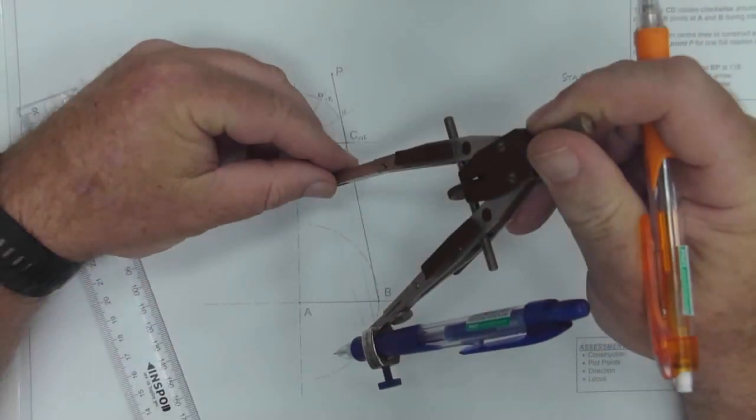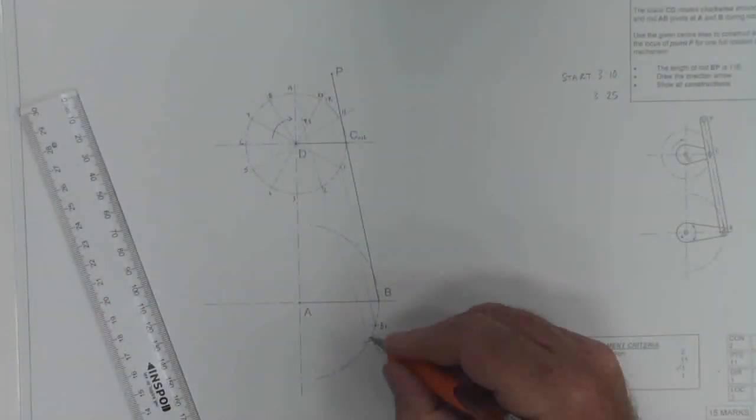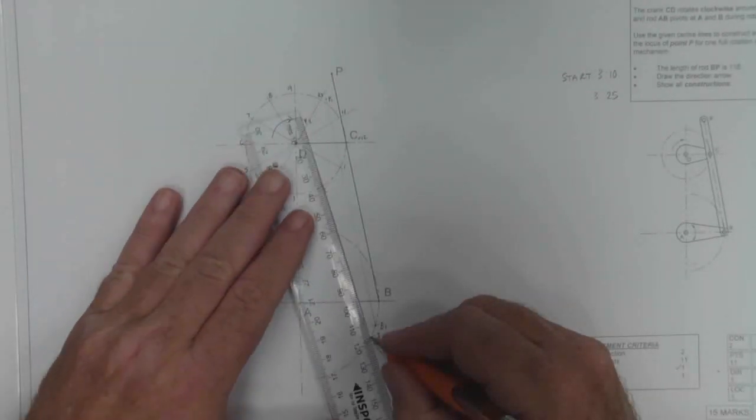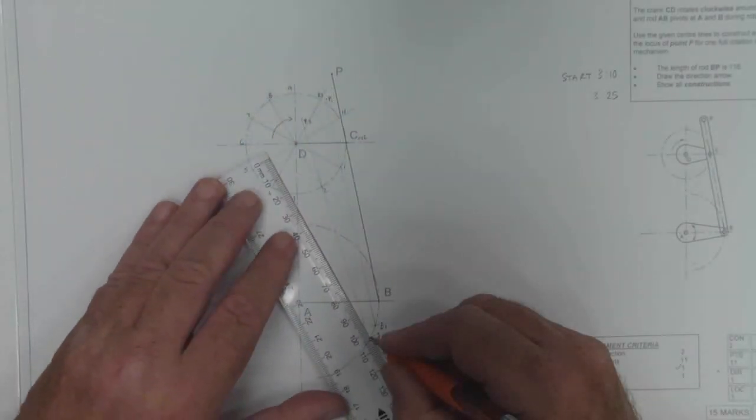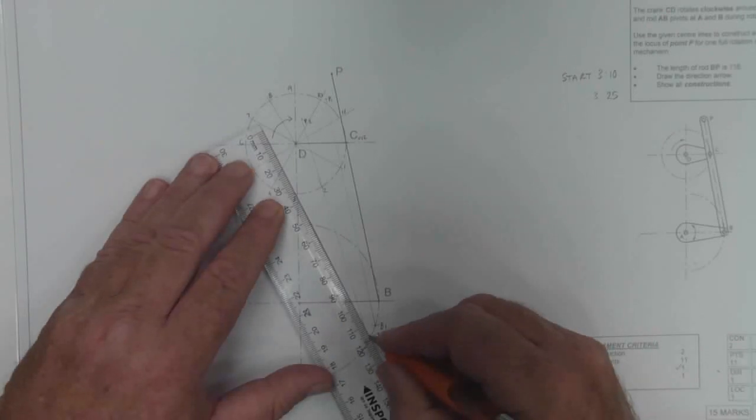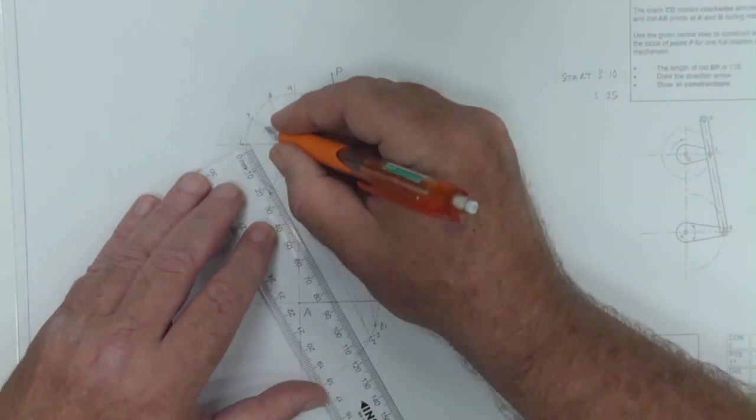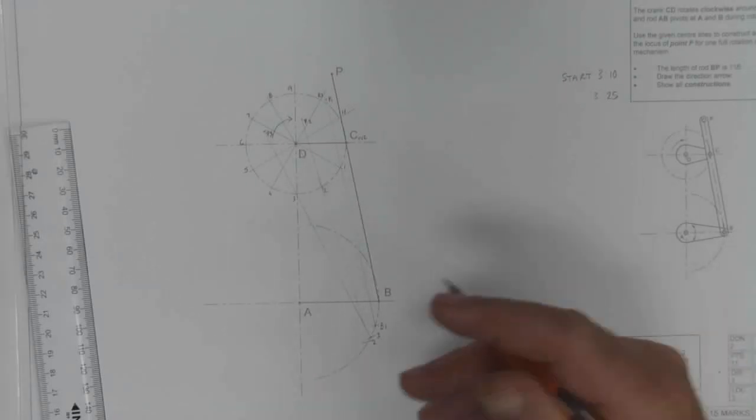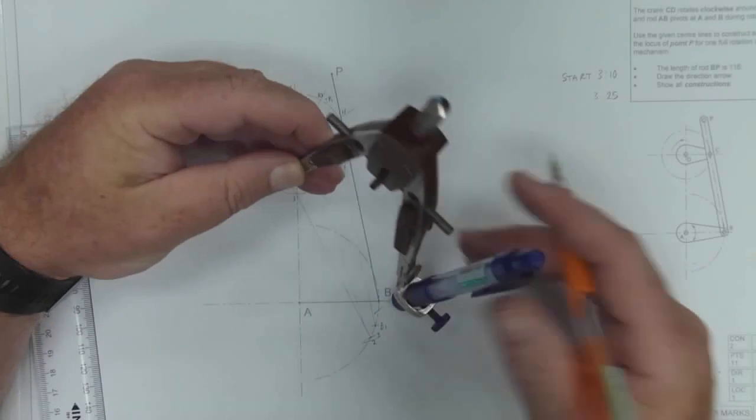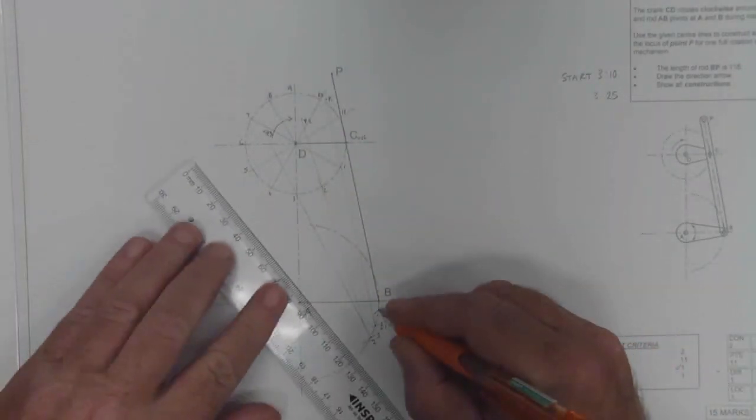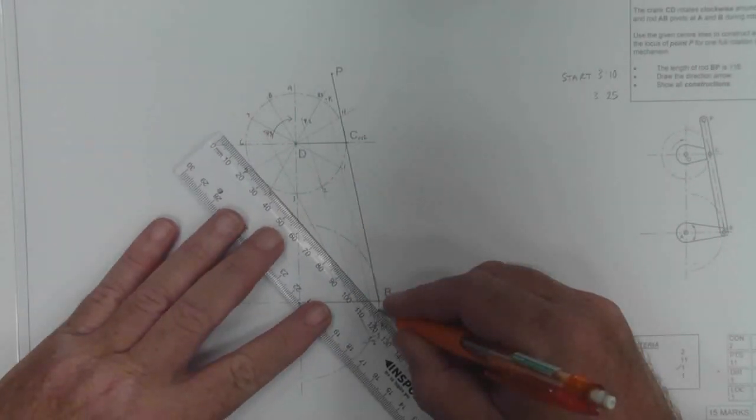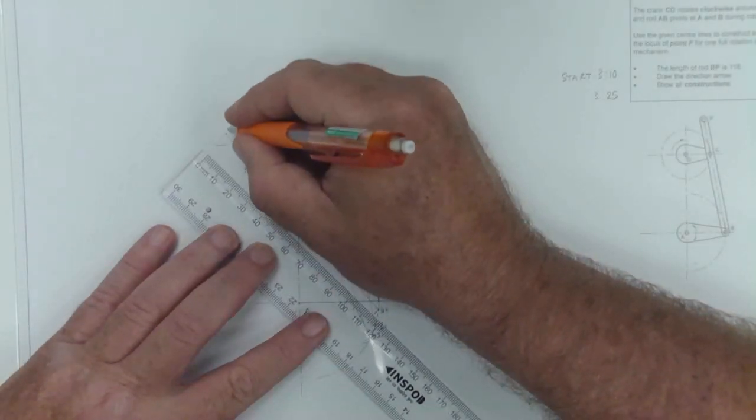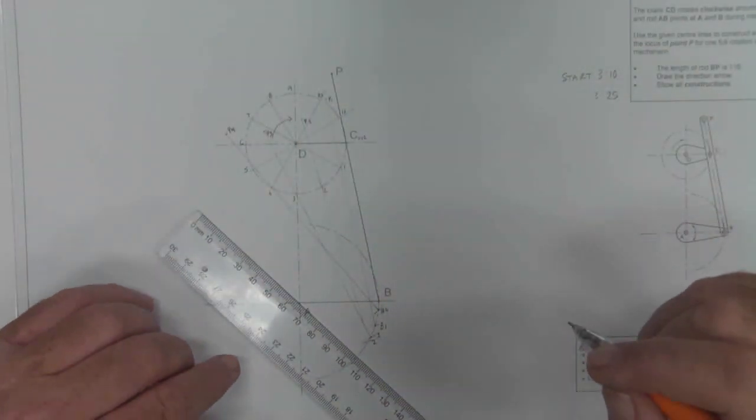I then draw the line from point B2 to C2 and I extend it that distance of 35. And that gives me point P2. I repeat the process for my next point 3. There is point 3. Mark it off. That gives me point B3. Line up point B3 to C3 and extend it 35. Point 4, mark off point B4, line up point B4 with C4, draw the line and extend it at a distance of 35 and that gives me point P4.